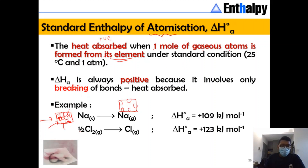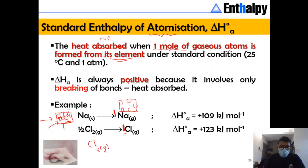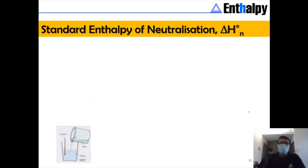You can also use the example of ½Cl₂(g) → Cl(g). Coming back to the definition: one mole of gaseous atoms is formed, so the product must be exactly one mole. You cannot write Cl₂(g) → 2Cl(g), because that does not match the definition — we need one mole per mole, giving ΔH°_at = +123 kJ/mol.